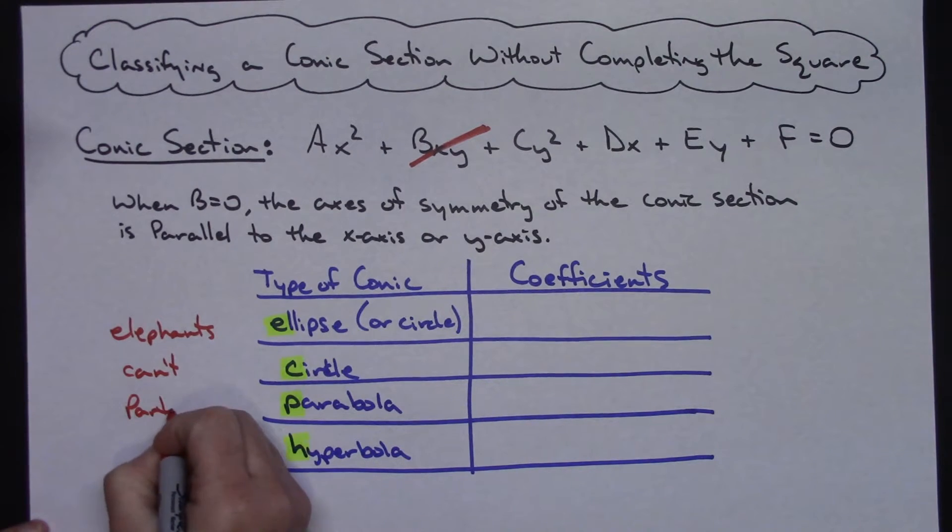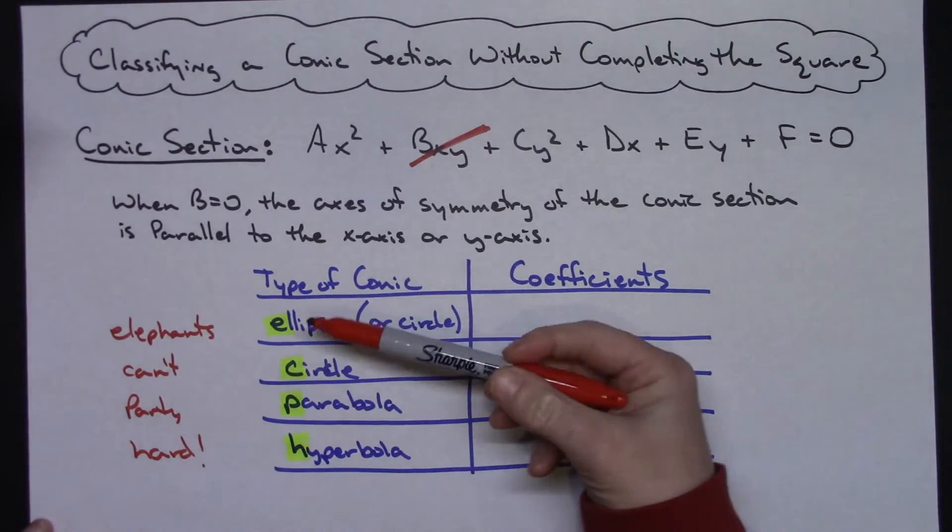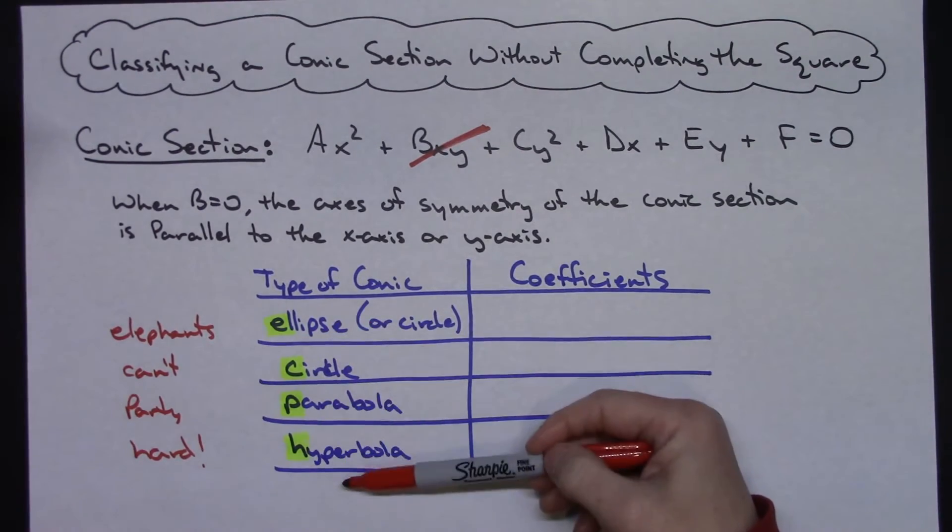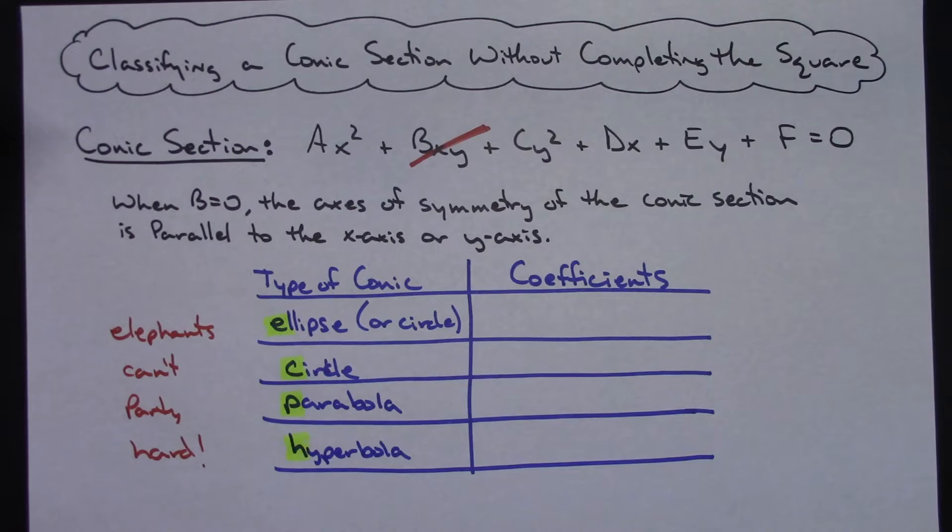And the more stupid your phrase is, then the easier it is to remember. So elephants can't party hard. That's going to get you to fill in this left side of this chart really, really quickly.